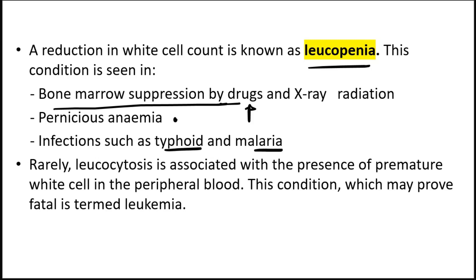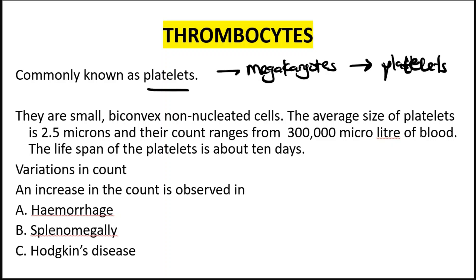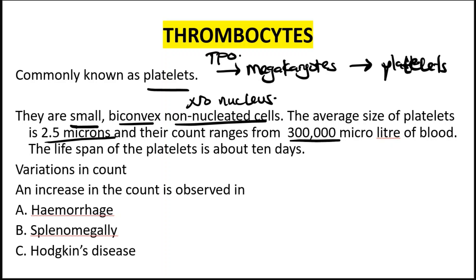Thrombocytes are what we call platelets. Platelets are formed from megakaryocytes in the bone marrow — megakaryocytes are produced by the effect of thrombopoietin on the stem cell. Platelets are very small, biconcave, and non-nucleated — they have no nucleus. The average size is 2.5 microns and the count ranges around 300,000 per microliter of blood. The increase in platelets is seen in hemorrhage, splenomegaly, and Hodgkin's disease.